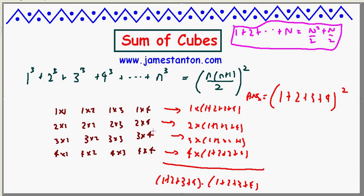1 plus 2 plus 3 plus 4 squared. So that's my first answer. These 16 multiplication problems add up to 1 plus 2 plus 3 plus 4 squared.